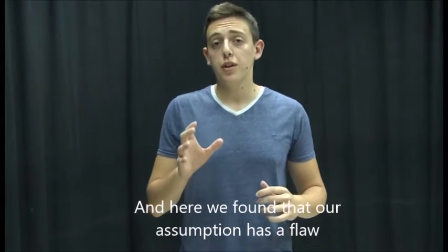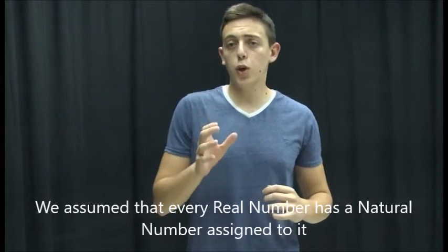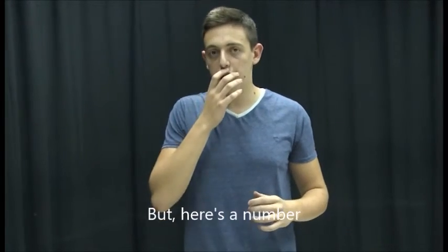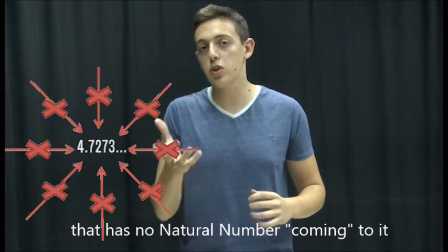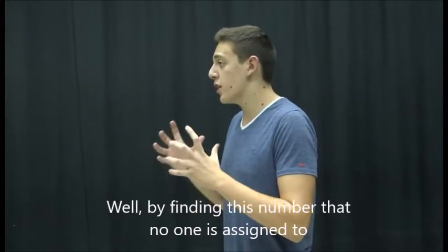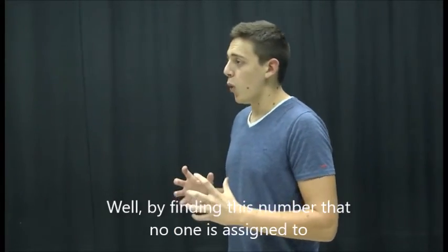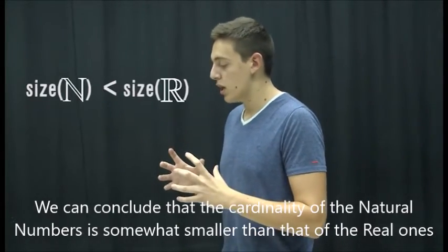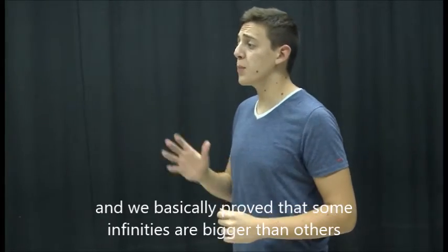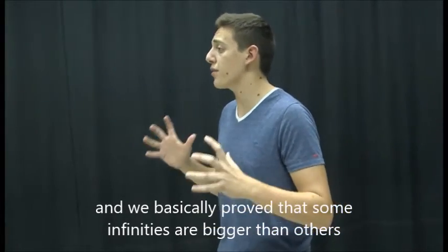And here we found that our assumption has a flaw. We assume that every real number has a natural number assigned to it, but here's a number that has no natural numbers coming to it. But by finding this number that no one is assigned to it, we can conclude that the cardinality of the natural numbers is somewhat smaller than that of the real ones, and we basically proved that some infinities are bigger than others.